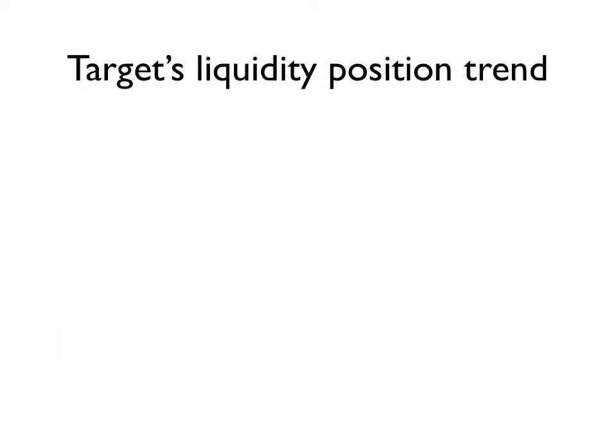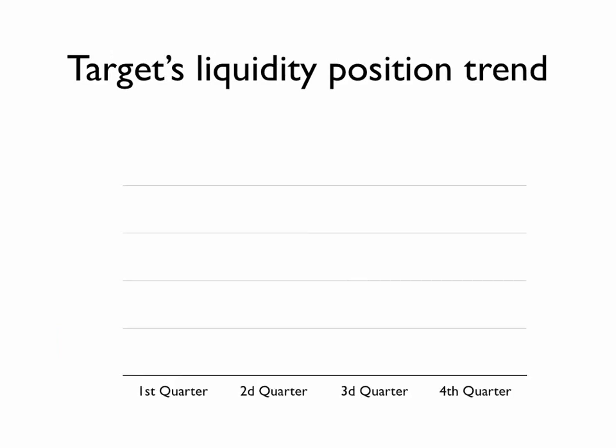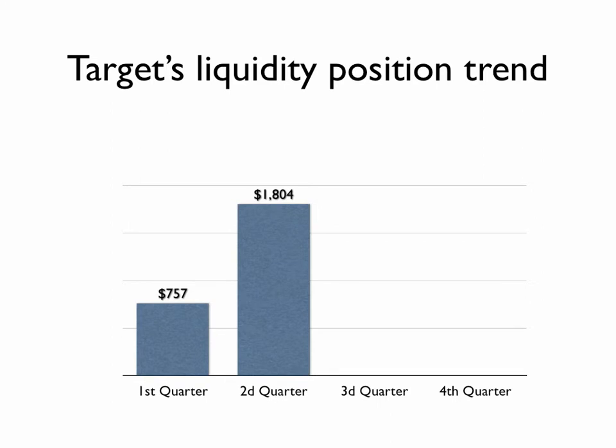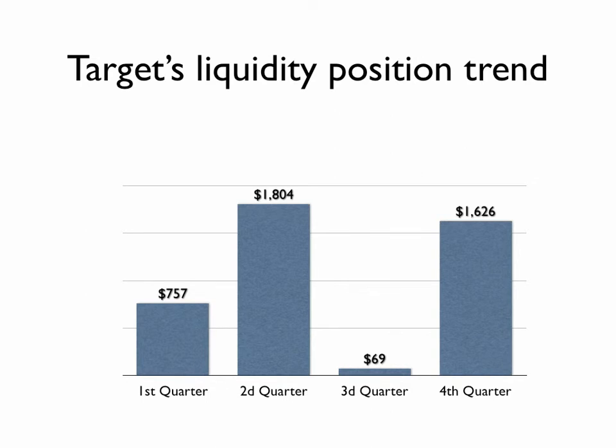Now let's take a look at the trend in Target's liquidity position for the last four quarters. As you can see, the liquidity position increases from the first quarter to the second quarter, falls sharply in the third quarter, and then recovers in the fourth quarter.